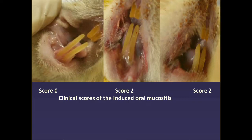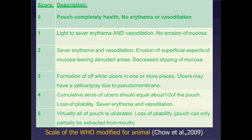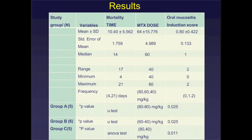The clinical scoring system used in this study was based on a modified scale produced by Chu et al. 2009, ranging from score 0 to score 5, covering various degrees of effect on the mucosal lining.